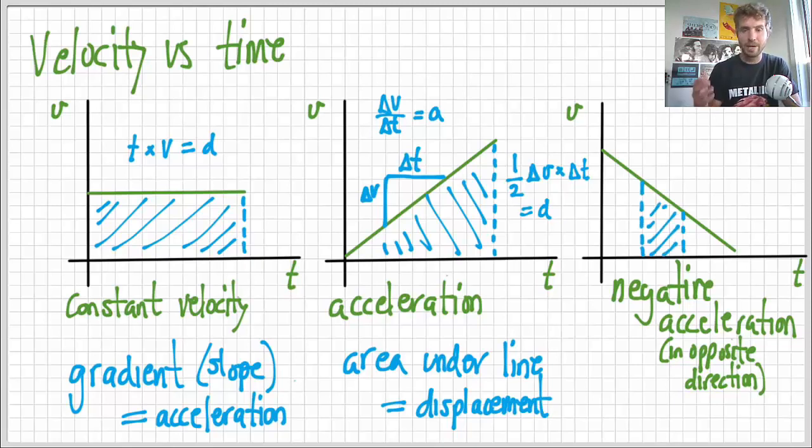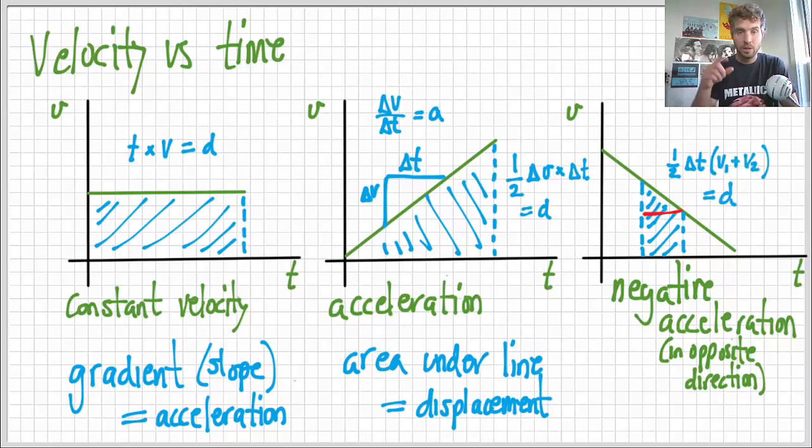We sometimes might have more complex shapes. So, for example, a trapezium, which you can do a couple things. You can break it into a triangle and a rectangle, or you could do it as a trapezium, but it's one half times change in time times the sum of the two velocities. The bases, the two bases of the trapezium or trapezoid. So, it's still time times velocity, and so it still is the displacement.